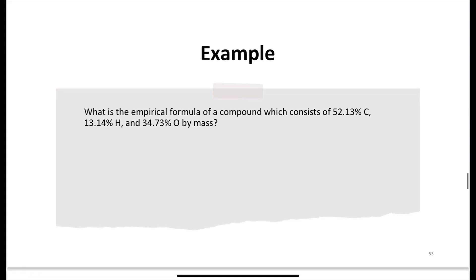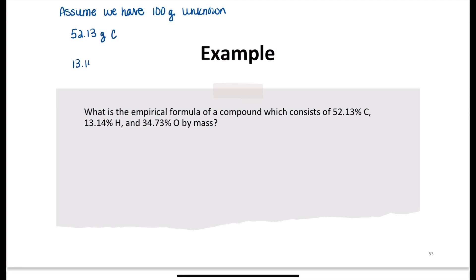Let's work an example: what is the empirical formula of a compound consisting of 52.13% carbon, 13.14% hydrogen, and 34.73% oxygen by mass? Those percentages add up to 100, which is convenient. To simplify, we assume we have 100 grams of the unknown. That means 52.13 grams of carbon, 13.14 grams of hydrogen, and 34.73 grams of oxygen.